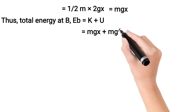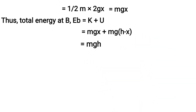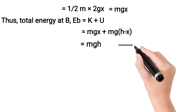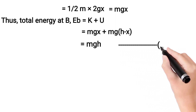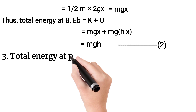Thus, total energy at B: EB is equals to kinetic energy plus potential energy. On putting the values of kinetic energy and potential energy, we get total energy at B: EB is equals to MGH.